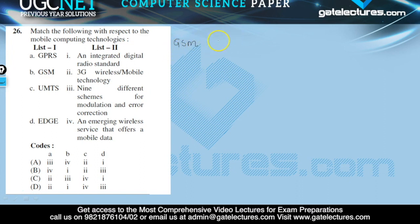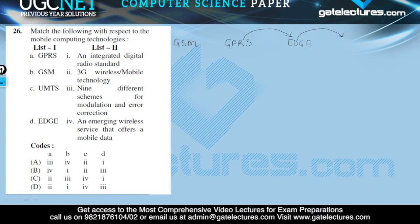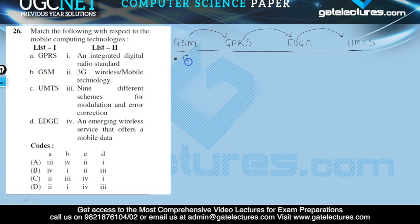The enhancement of GSM is GPRS. After GPRS, EDGE was launched — EDGE is the enhancement of GPRS. The enhancement of EDGE technology is UMTS. So they are enhanced versions of GSM. The full form of GSM is Global System for Mobile Communication.